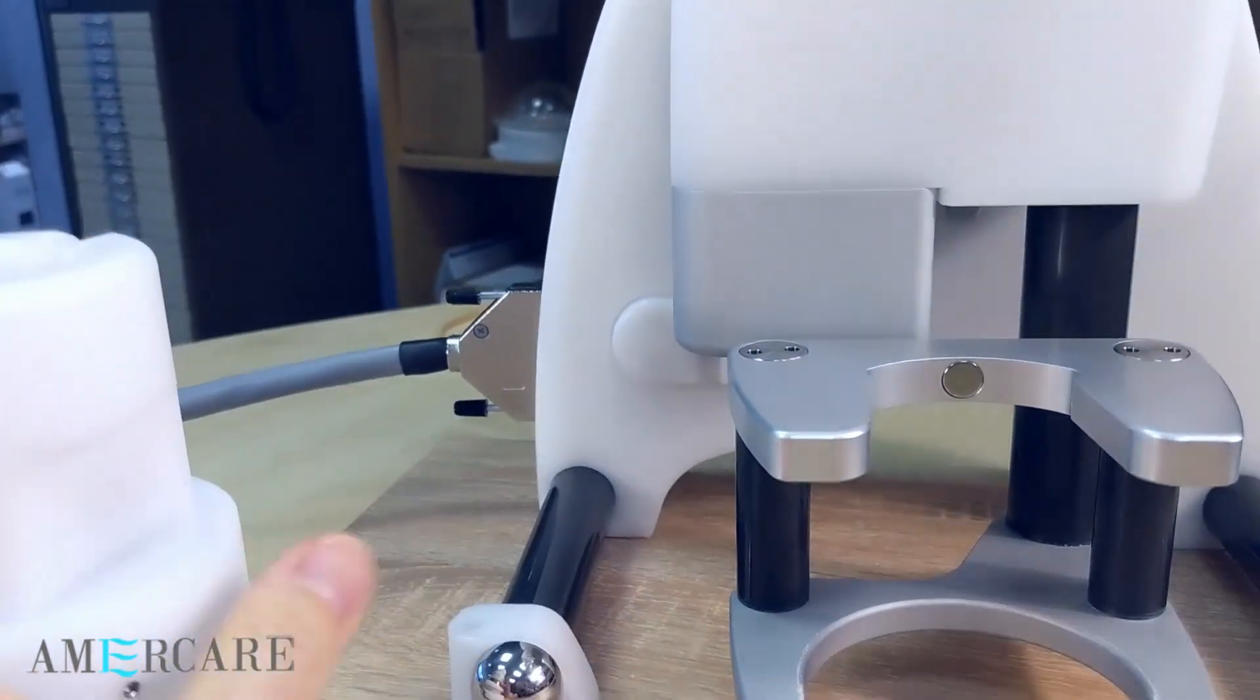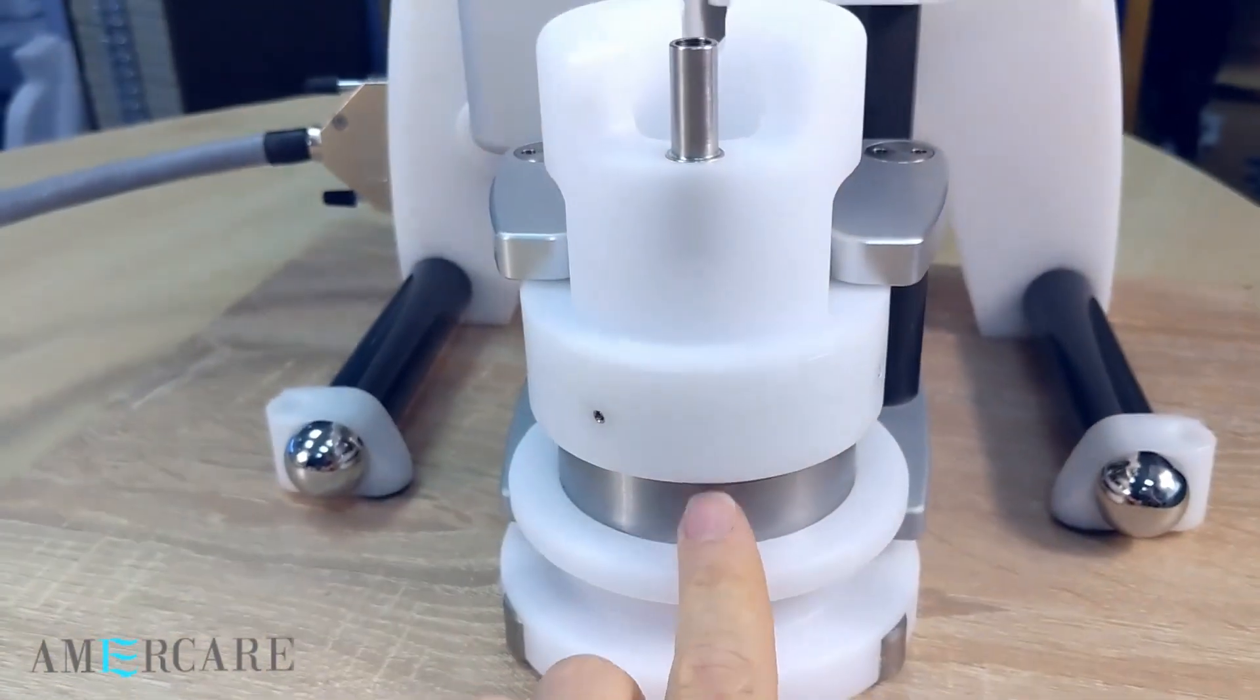When the vial shield assembly is in position, the machine knows if the shield has been correctly loaded.